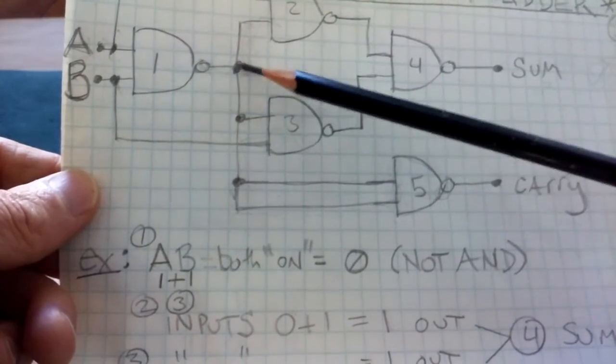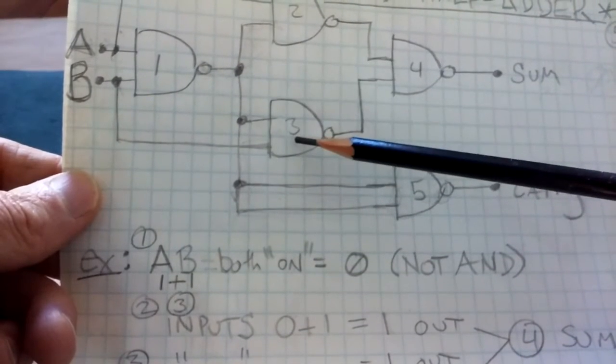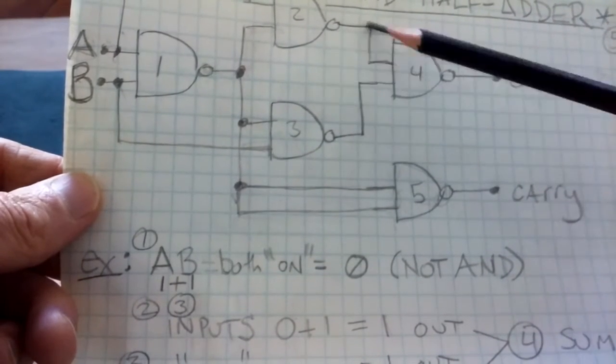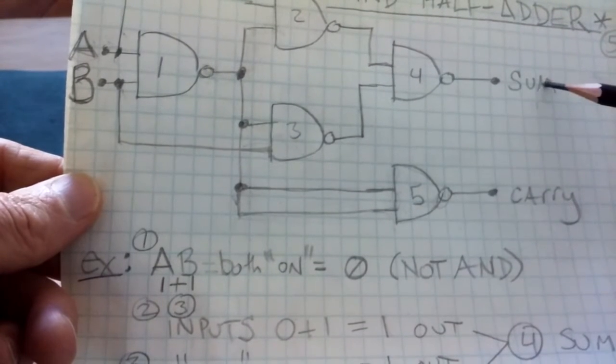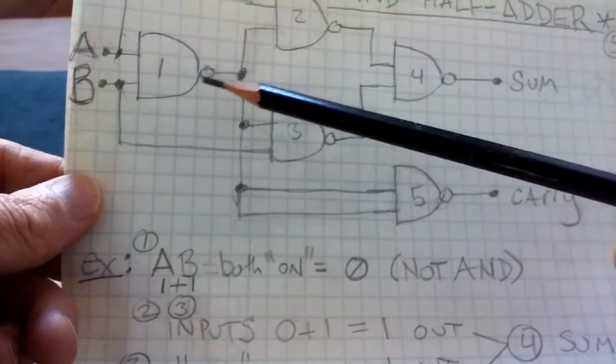Our output is 0. So then we have a 0 and a 1 going into 2, and a 0 and a 1 going into 3. So that's going to create an output of 1 on each, which going into the sum is going to create an output of 0, a 0 sum. Okay, so fair enough.